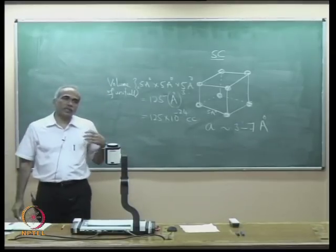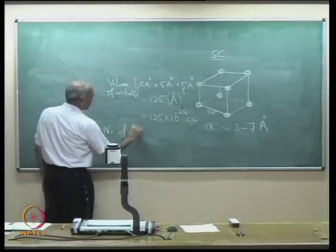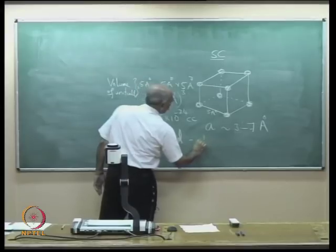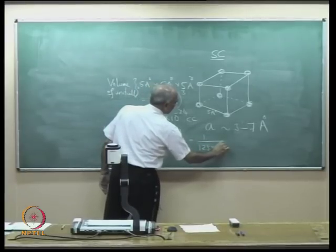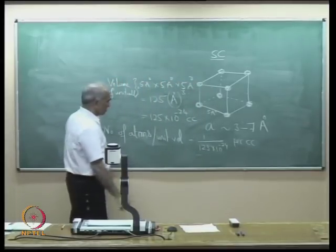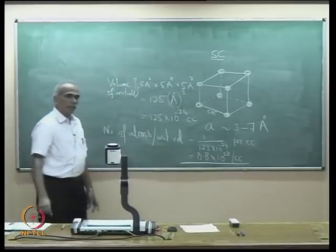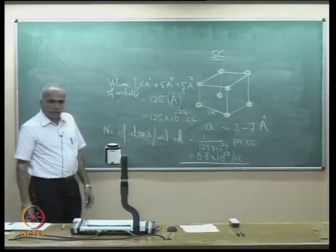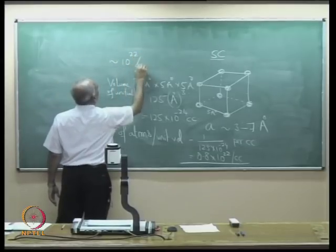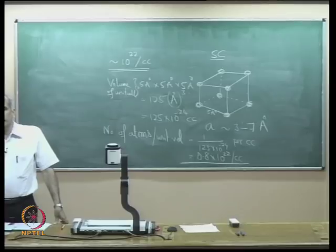The number of atoms per unit volume is 1 divided by 125 × 10⁻²⁴ per cm³, which equals approximately 0.8 × 10²² per cm³, or of the order of 10²² per cm³. The number of atoms per unit volume in a semiconductor is typically 10²² per cm³.